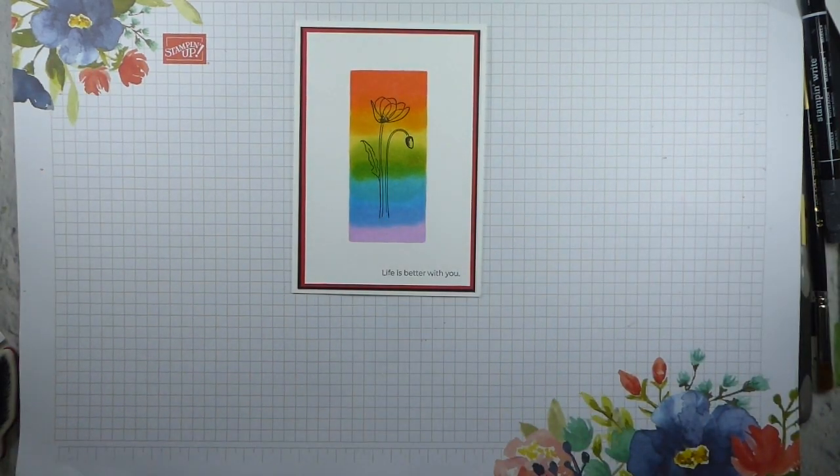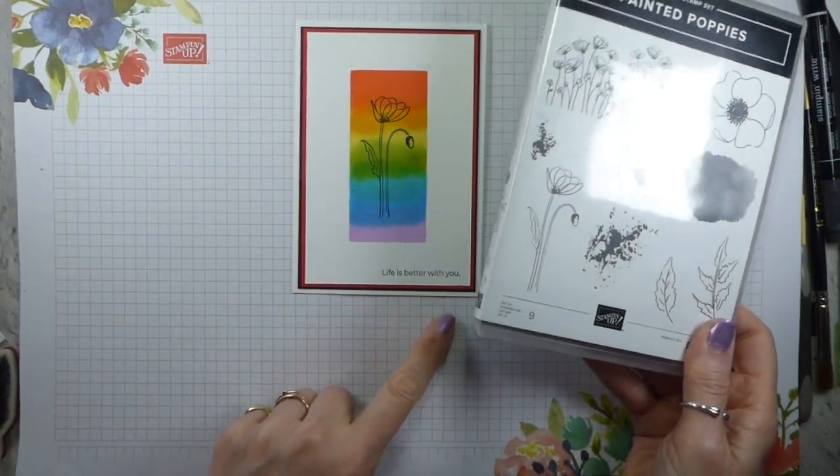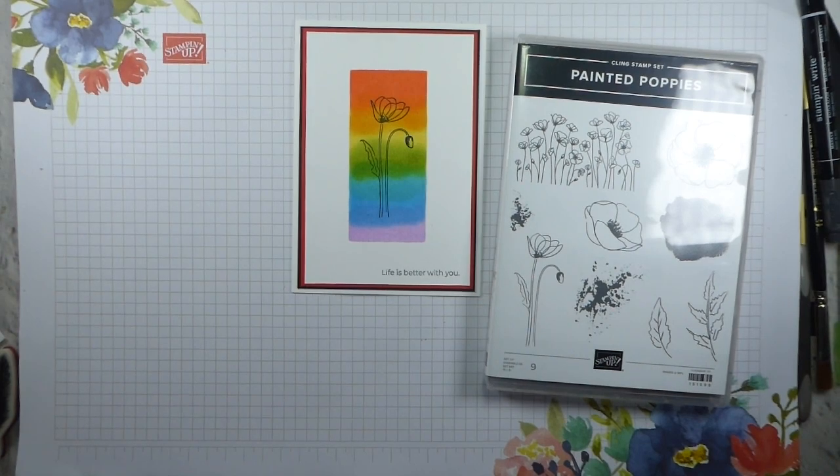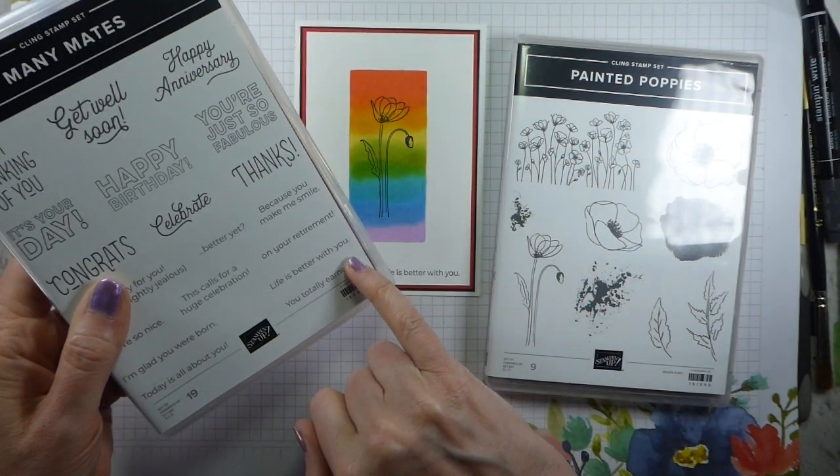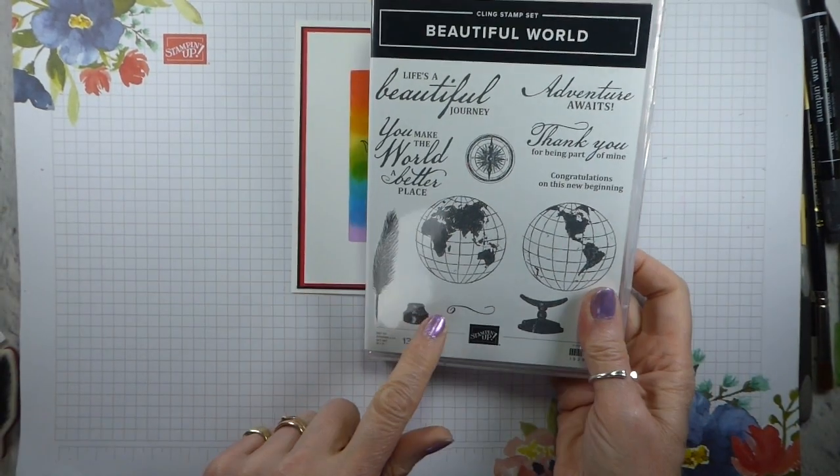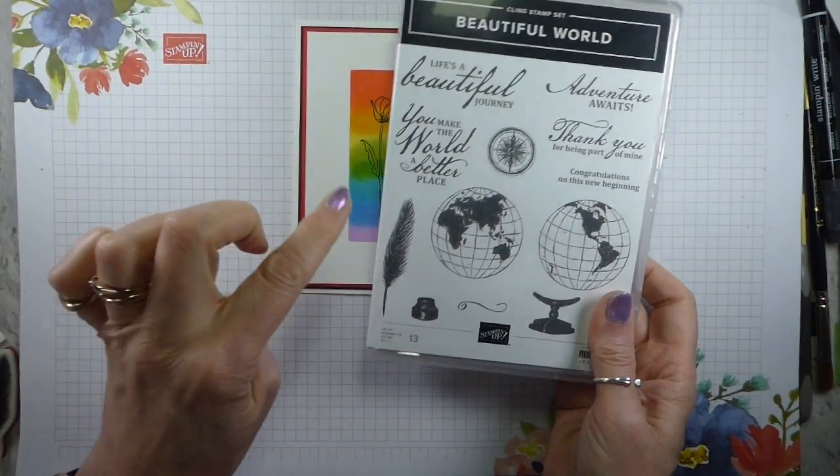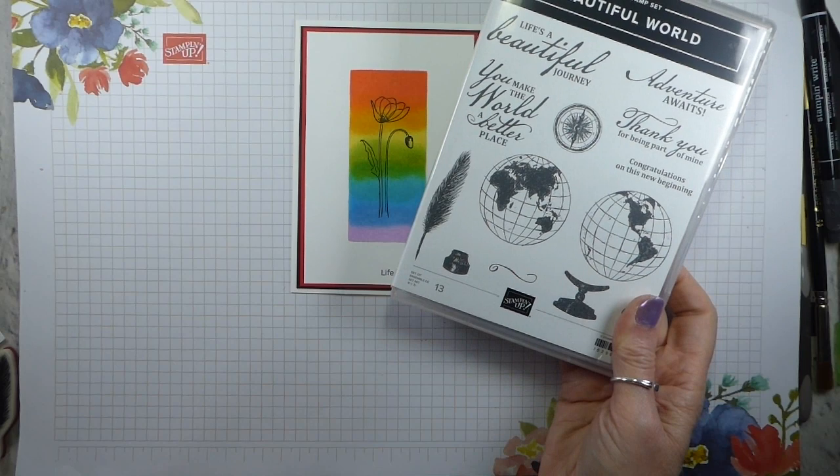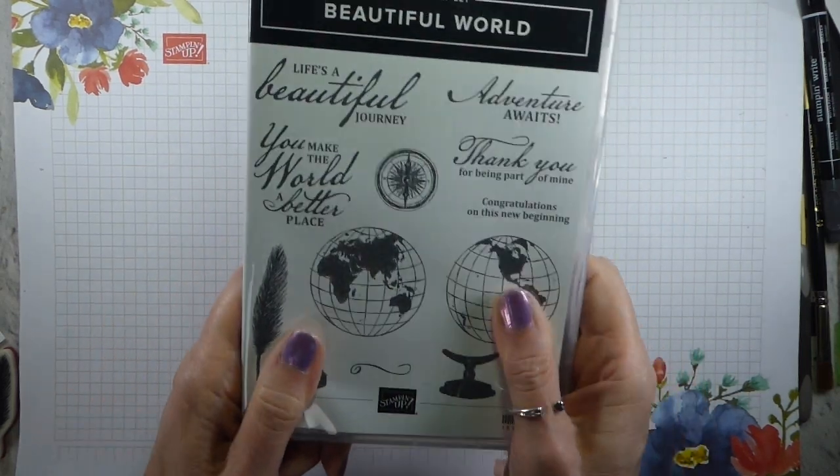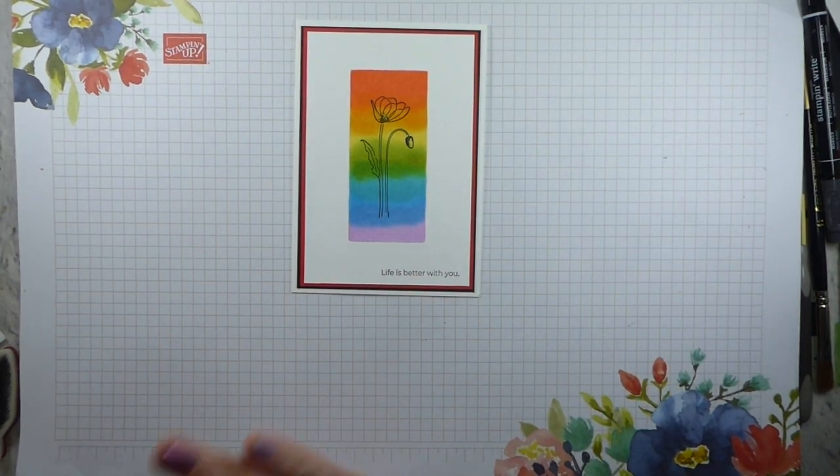I have used the Painted Poppies, this little poppy here, and then from Many Mates, I have used Life is Better With You. For the one we're going to make together, I'm going to use the Beautiful World stamp set, and I'm going to use Life is a Beautiful Journey and the Feather. It's all from one stamp set, but we're going to use different colors.